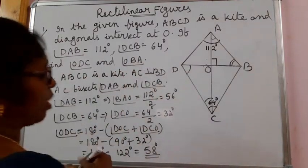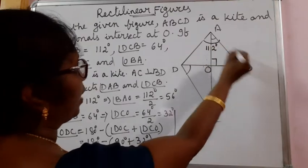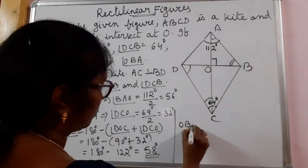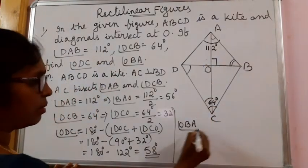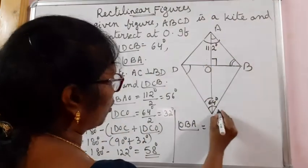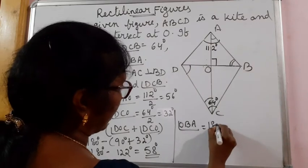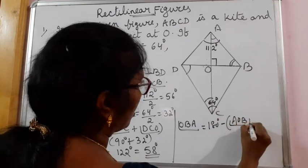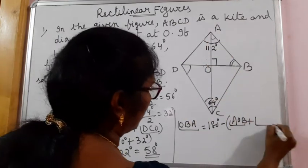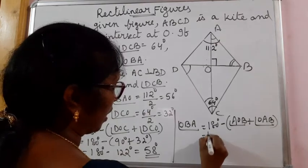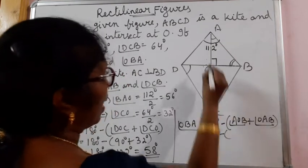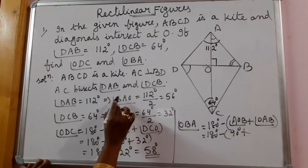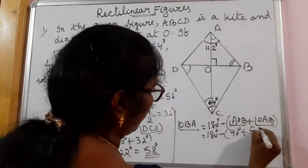Now let us work out for angle OBA. Same way, OBA is a triangle in which if you want to find angle OBA, 180 degrees minus angle AOB plus angle AOB is 90 degrees. And angle OAB or BAO is 56 degrees.